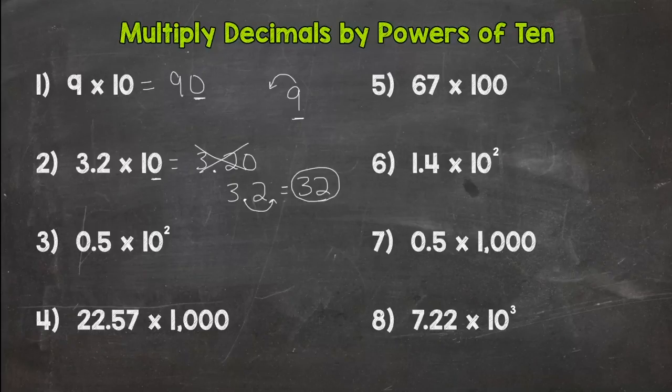So the key to multiplying decimals by powers of 10 is moving the decimal. And you either look at the number of zeros in your power of 10, if it's in standard form written like a regular number, or if it's in exponential form like number 3, you look at the exponent.